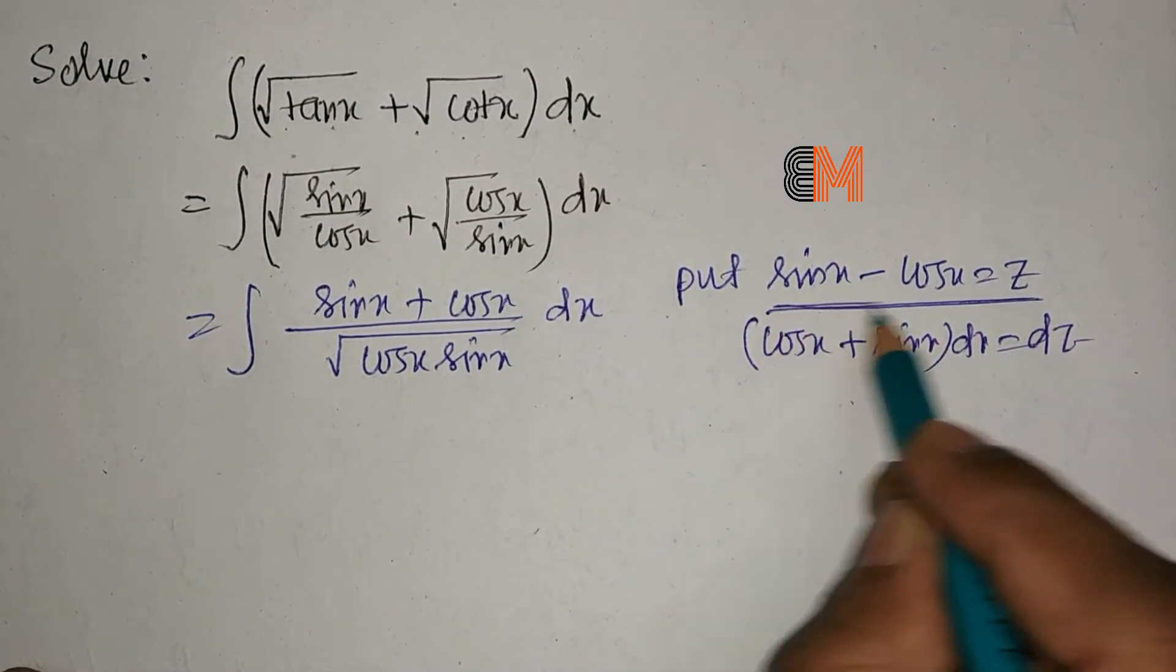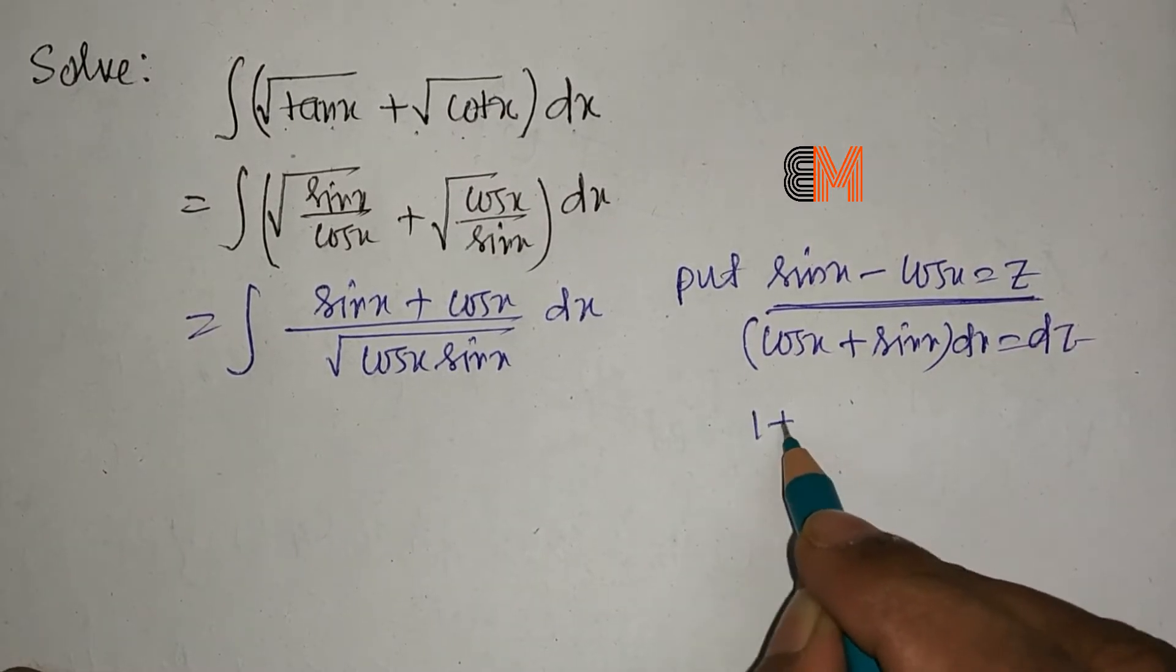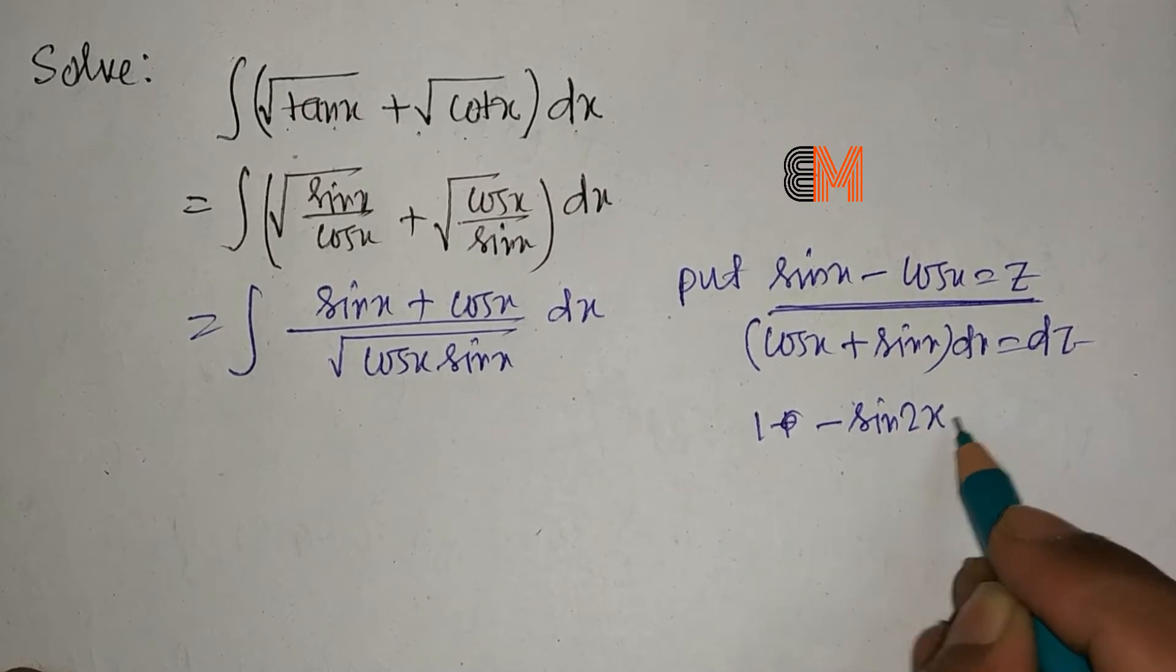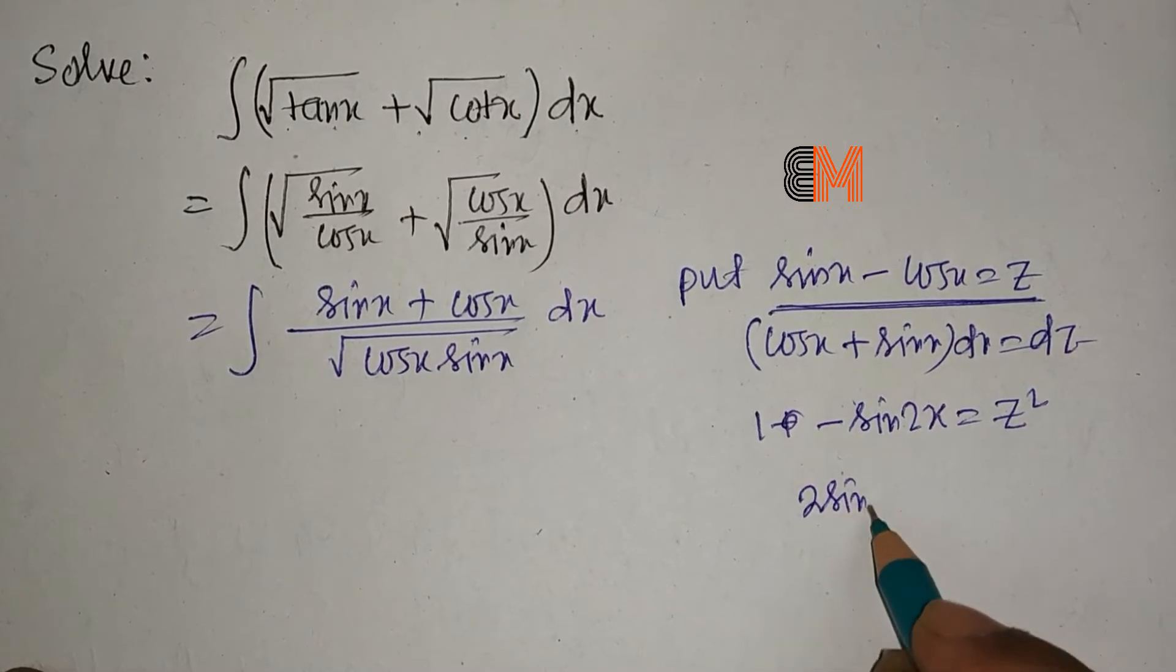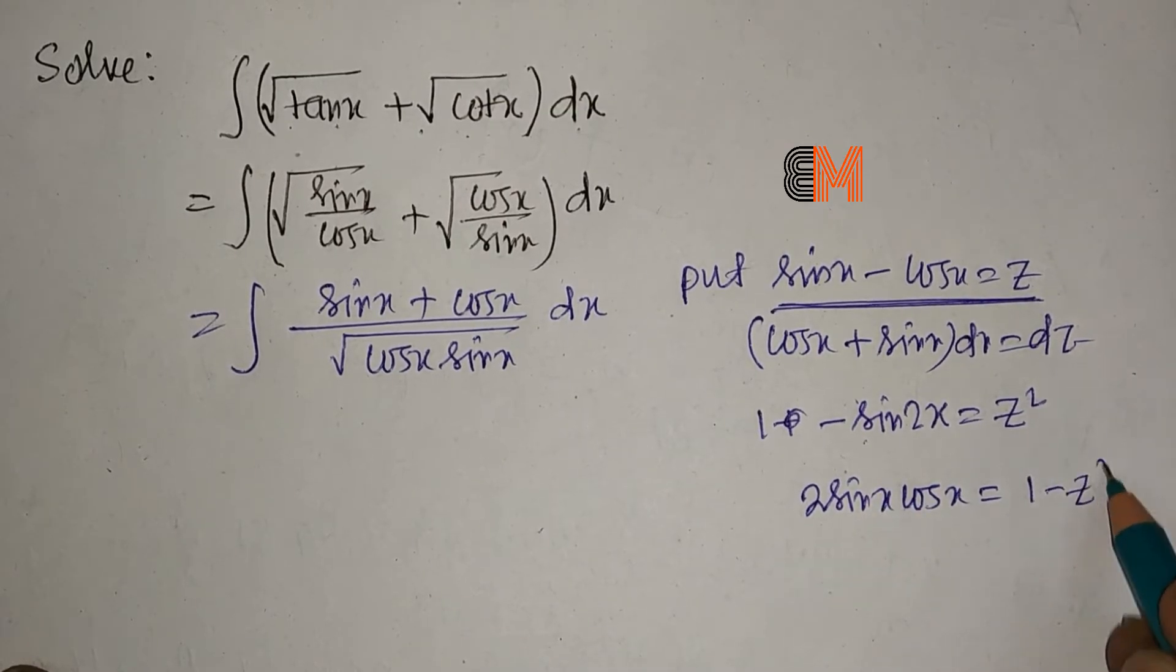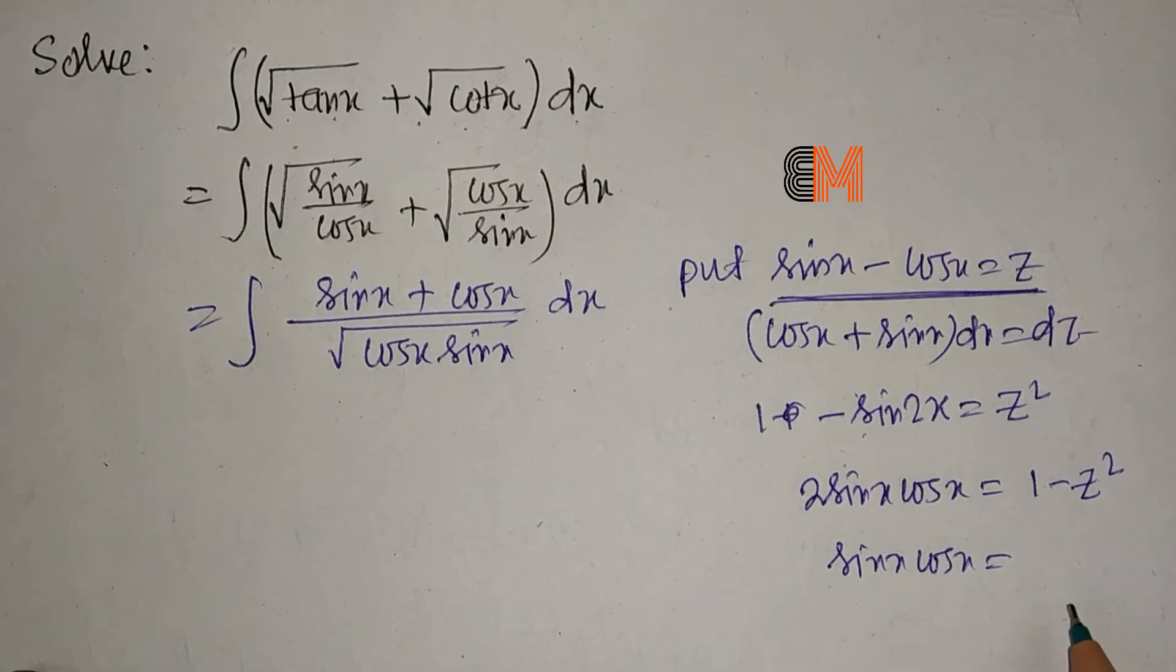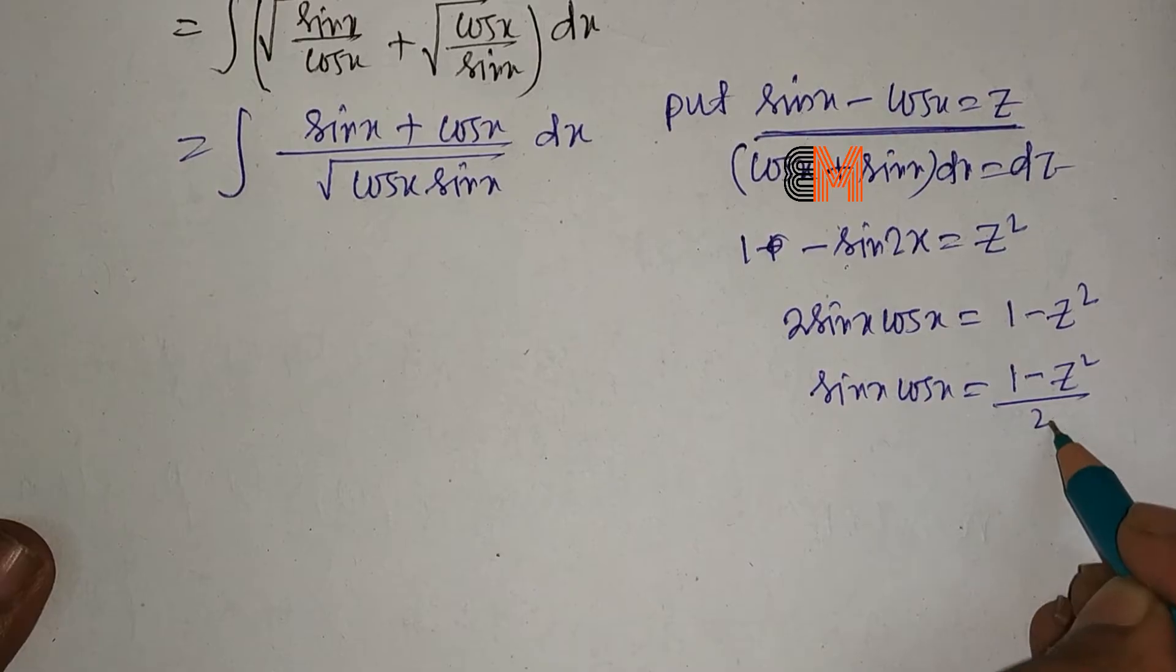If we square this, we get 1 - sin(2x) = z², so 2sinx·cosx = 1 - z². Therefore, sinx·cosx = (1 - z²)/2.